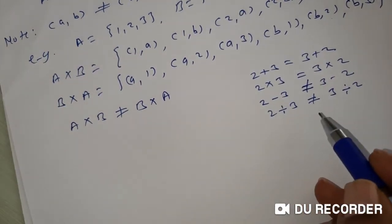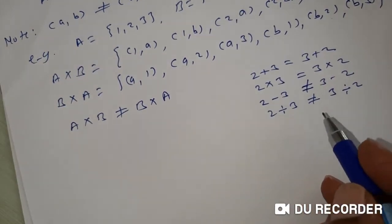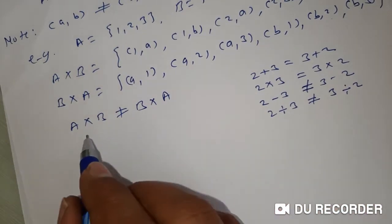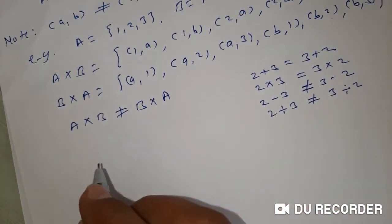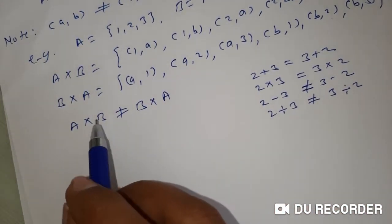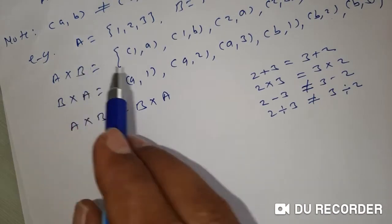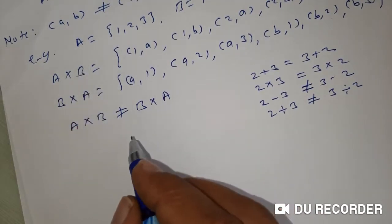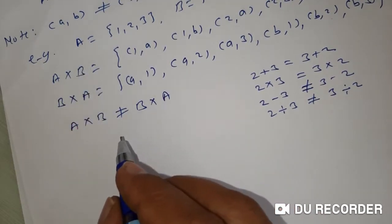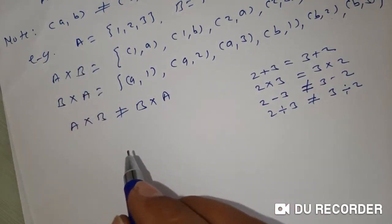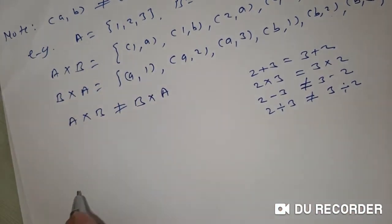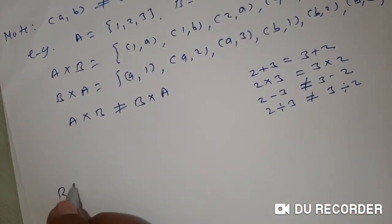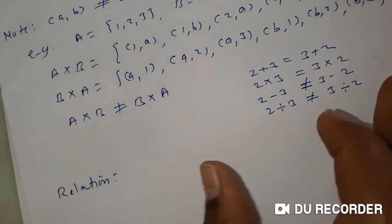The division operation is not commutative. Similarly, the Cartesian product of two sets is not commutative — A cross B and B cross A are not equal. Next is the definition of a relation.